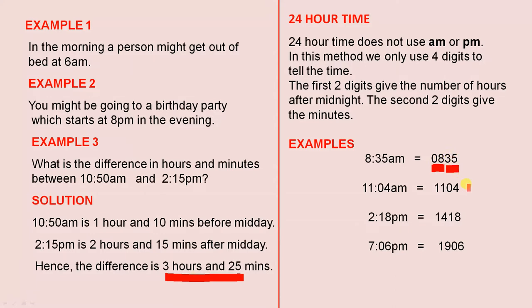11:04 AM — the first two digits, 11, tell you it is 11 hours after midnight, and the 04 is an extra 4 minutes. 2:18 PM is in the afternoon, so it is after midday. The 14 tells you that 2 PM is 14 hours after midnight, and then you add the extra 18 minutes.